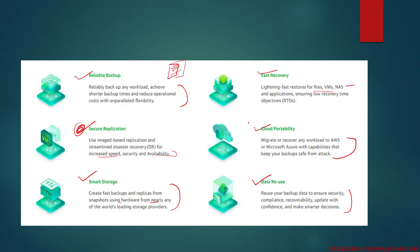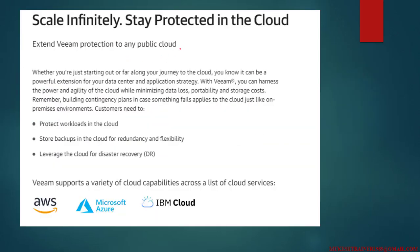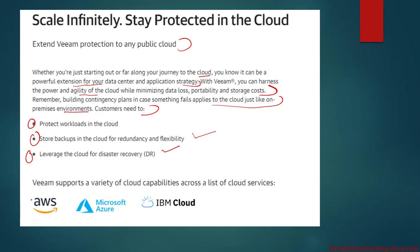Scale infinitely and stay protected in the cloud — cloud portability. Extend Veeam protection to any public cloud, whether you are just starting out or far along your journey to the cloud. Veeam can be a powerful extension for your data center and application strategy. With Veeam Backup, you can harness the power and agility of the cloud while minimizing data loss, portability costs, and storage costs. Veeam supports Amazon AWS, Microsoft Azure, and IBM Cloud.